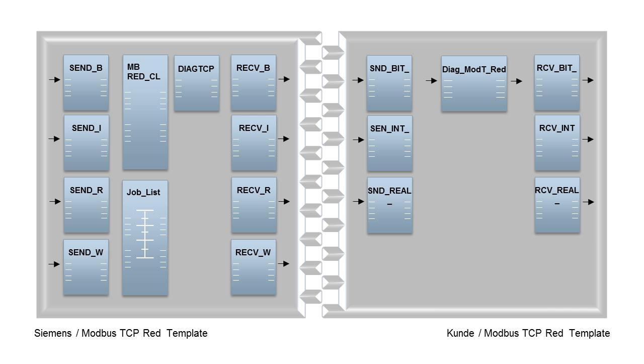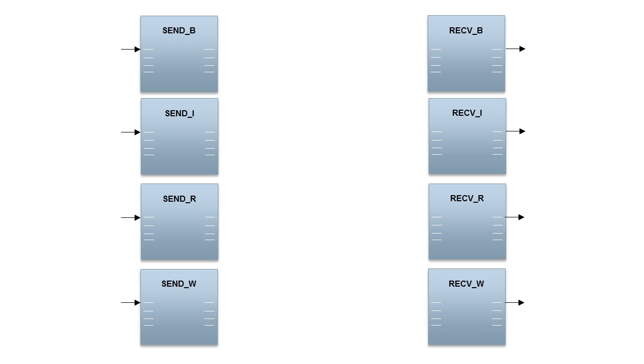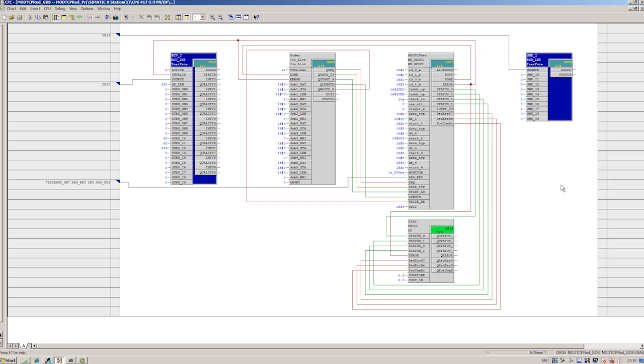This diagram shows the entire application example. Our PCS7 template has a modular structure. Transmission and receiving blocks are available — these interface blocks prepare the data for communication exchange. They are available for different data types: bool, real, integer and word.